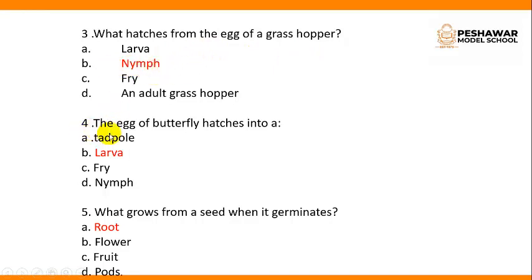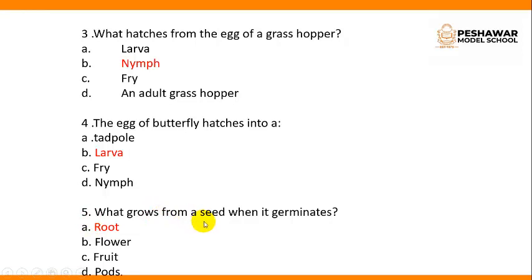Number 4: The egg of a butterfly hatches into larvae. Number 5: What grows from a seed when it germinates? — Answer: Root.